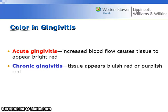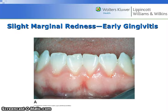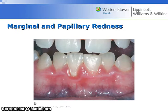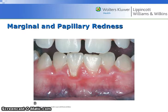Regarding color in gingivitis: in acute gingivitis, increased blood flow causes tissue to appear bright red. In chronic gingivitis, the tissue appears bluish-red or purplish-red. This image shows slight marginal redness in early gingivitis. See figure 13.5 on page 227 for more information. This image shows marginal and papillary redness, also figure 13.5 on page 227.